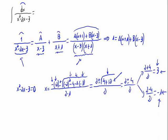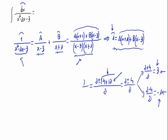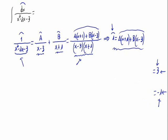We want to find the values of A and B. One way would be using the distributive property and equating coefficients. Another option is substituting specific values — and the best values to use are the roots of the equation, 3 and minus 1, since they make one term vanish each time.